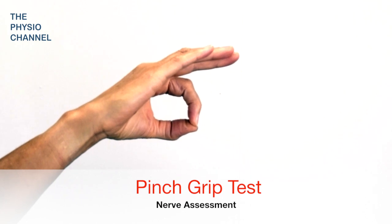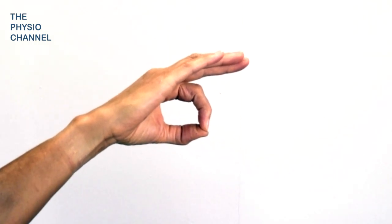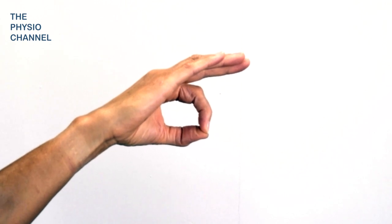This is the pinch grip test, also known as the OK sign. It is used to test for compression of a branch of the median nerve.